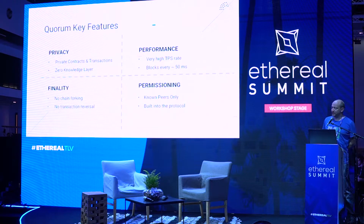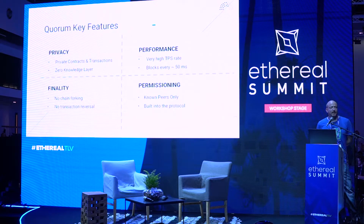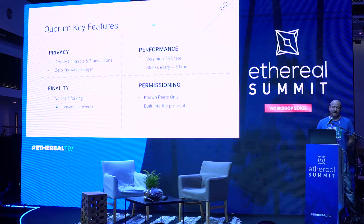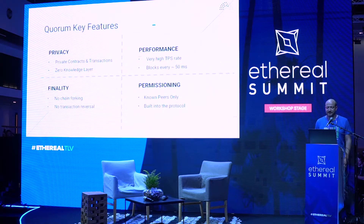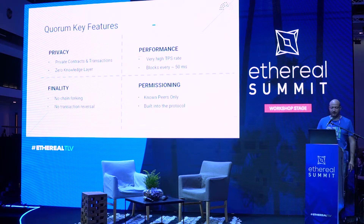Finally, we have permissioning. Permissioning is pretty straightforward: when you're in an enterprise configuration, you need to know every other person on the network. It's the concept of being able to configure who is supposed to participate in the blockchain and who's supposed to be using it. I'll go into details of this model in a few minutes.